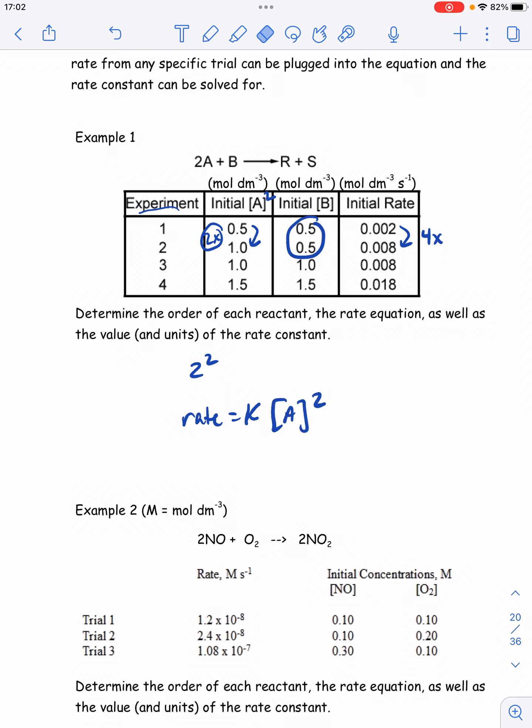Now I need to do the same thing for B. So I need to go find two trials where A is staying the same. That would be trials two and three, and B is being doubled now. And if I look at that, I see that there's no change. And that implies that B is zero order, which means I don't actually write it in my rate expression.